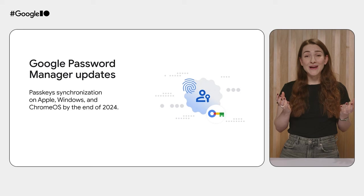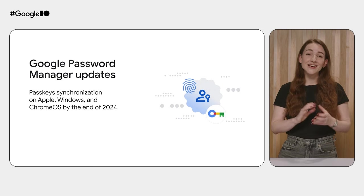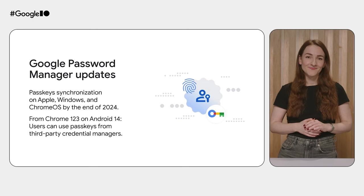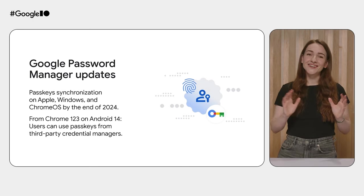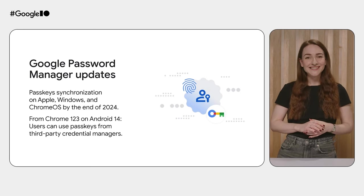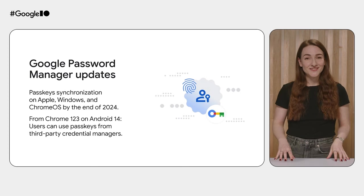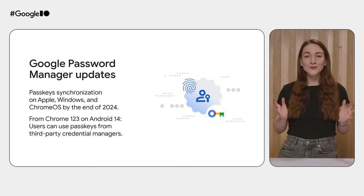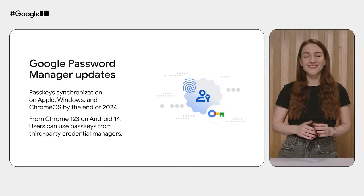We're working on making passkeys from Google Password Manager synced to these devices by the end of 2024. For now, if you're signed into Chrome on both an Android device that has a passkey and a Windows, Apple, or Chrome OS device that doesn't, you'll get a push notification on your Android device to use the passkey and be able to sign in on the other device. Starting from Chrome 123, Chrome users on Android 14 and above will be able to use passkeys from third-party Credential Managers, with full third-party Credential Manager support under active development.